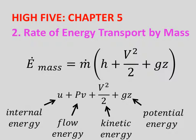The rate of energy transport by mass equals m dot times H plus V squared over 2 plus GZ, where the equation breaks down as U plus PV plus V squared over 2 plus GZ. U is the internal energy, PV is the flow energy, V squared over 2 is the kinetic energy, and GZ is the potential energy.